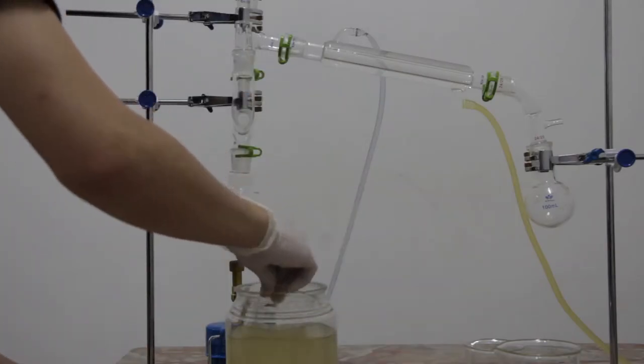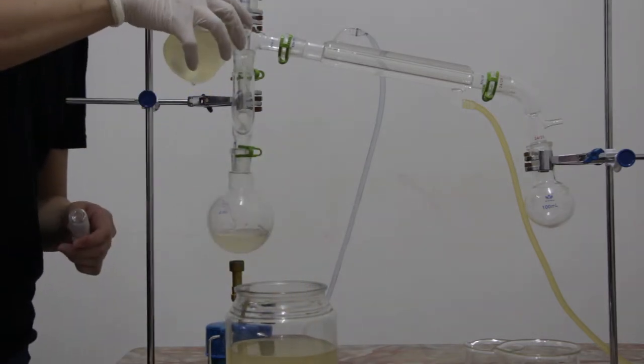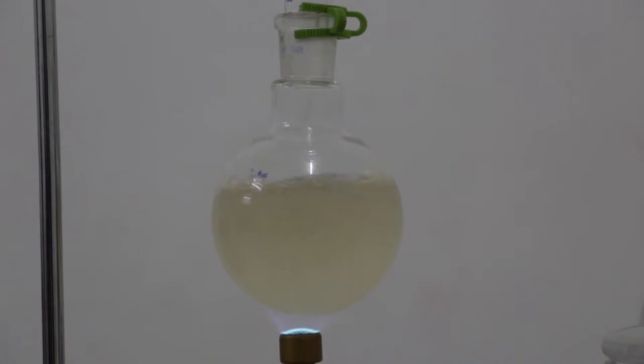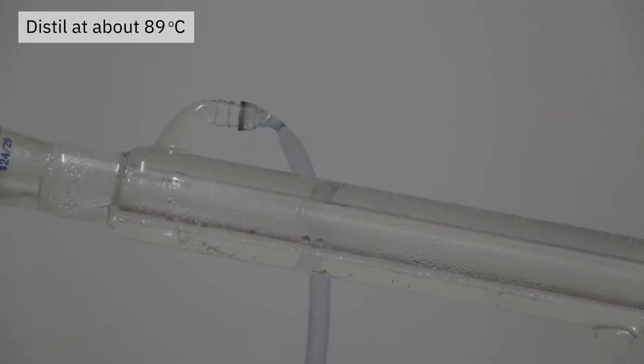The solution is then transferred from the fermentation vessel to the flask using a beaker. The solution is then heated and the distillate is collected at a temperature of roughly 89 degrees Celsius. This process is repeated with the remainder of the solution.